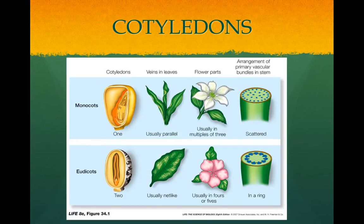We classify angiosperms based on the cotyledons, which are the seed leaves. They are based on one cotyledon, and therefore a monocot. Monocots usually have parallel veins in their leaves. Their flowers usually have multiples of threes, and they have a scattered arrangement of the vascular bundles in the stem.